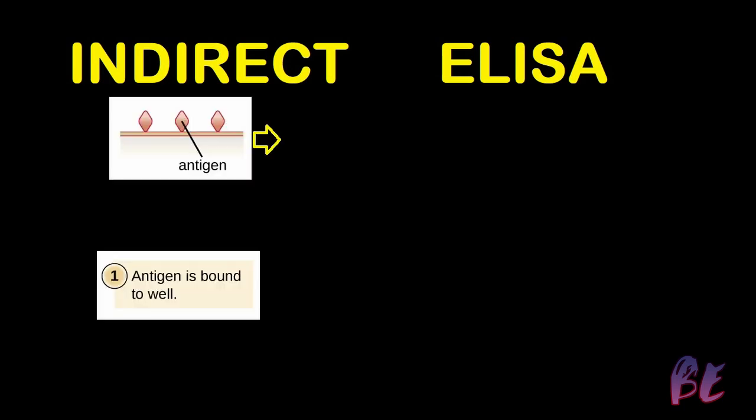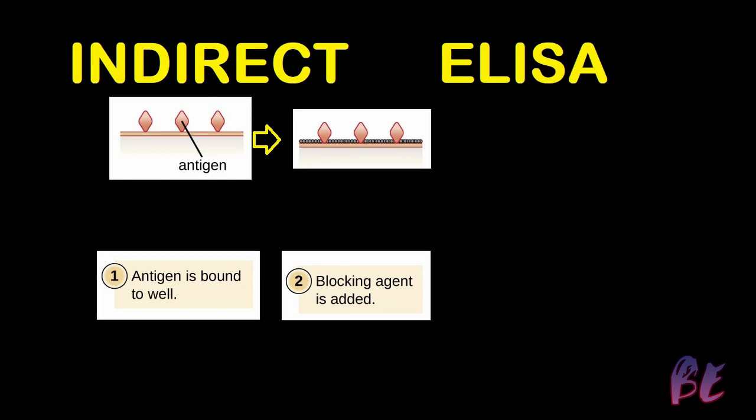Let us go to indirect ELISA. In the case of indirect ELISA, the antigen is previously already bound to the well, which we use to detect the antibody. A blocking agent is added to block the surface of the microwell plate so that the antibody we will use to detect it will not attach to the surface — it will only attach with the antigen.